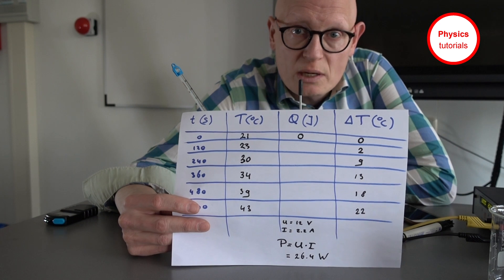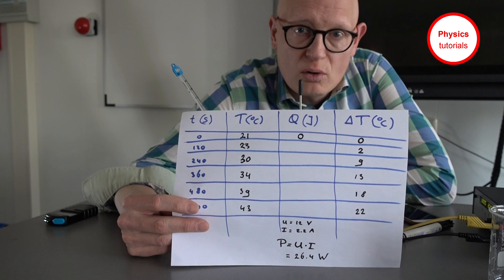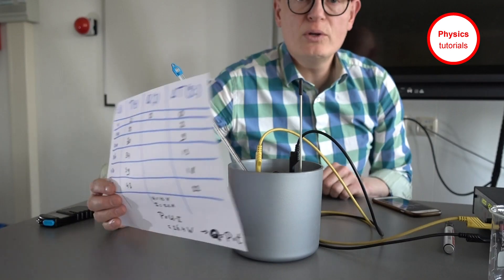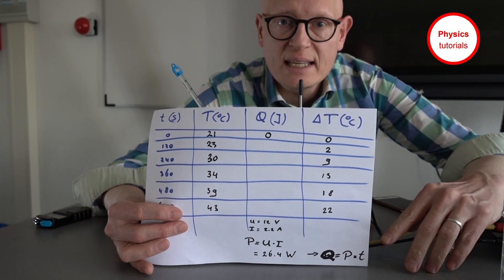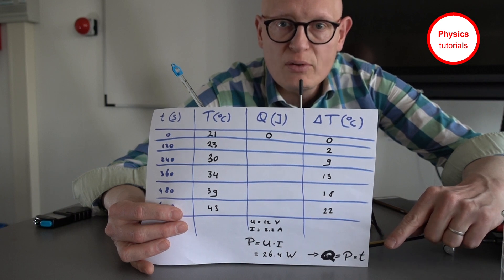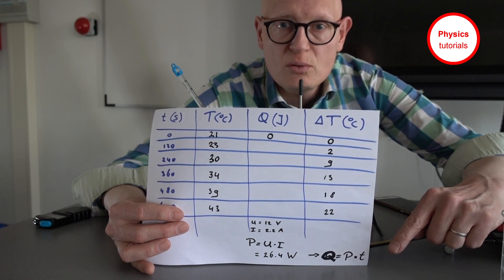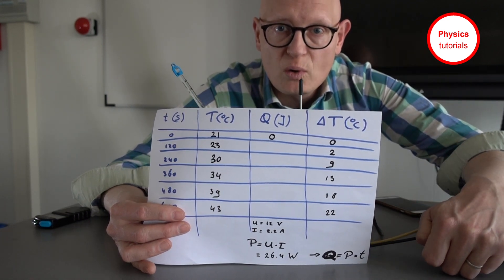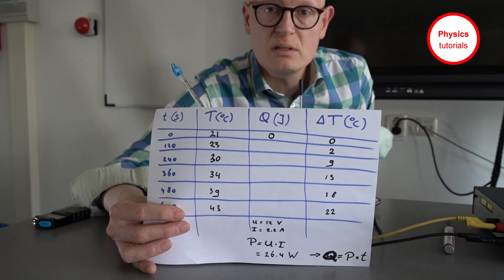With the formula P = U × I, when you fill in the numbers you find that the power is 26.4 watts. That means every second 26.4 joules of heat energy is transferred to the water. Now you can use the power of the heating element to calculate the exact amount of heat energy which is transferred into the water with the formula Q = power × time. So when you fill in 120 seconds for time you get 26.4 × 120, which results in 3000 joules.